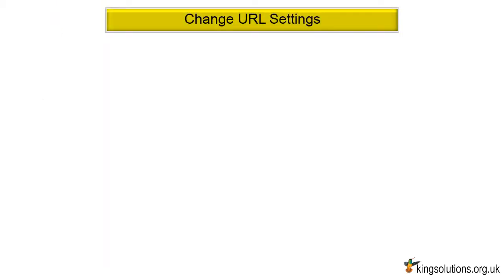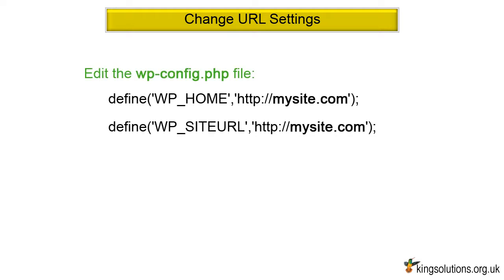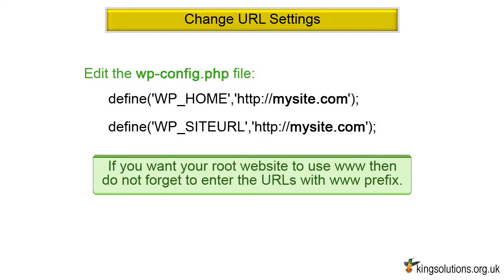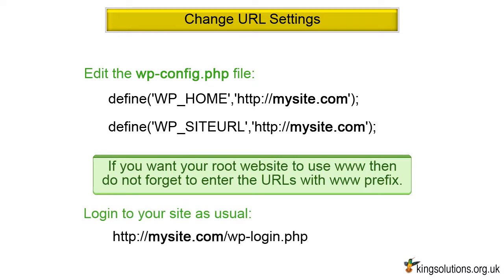Change URL Settings. At this stage, trying to login to the root website will simply send you back to the subdomain website's admin area. Using cPanel's file editor or a text editor attached to your FTP client, edit the wp-config.php file in the root directory of your domain. You will need to change the defines for WP_HOME and WP_SITEURL to reflect your new site location, replacing mysite.com with your own domain name. You can now visit your WordPress site's admin area on the root domain name — just login as usual.